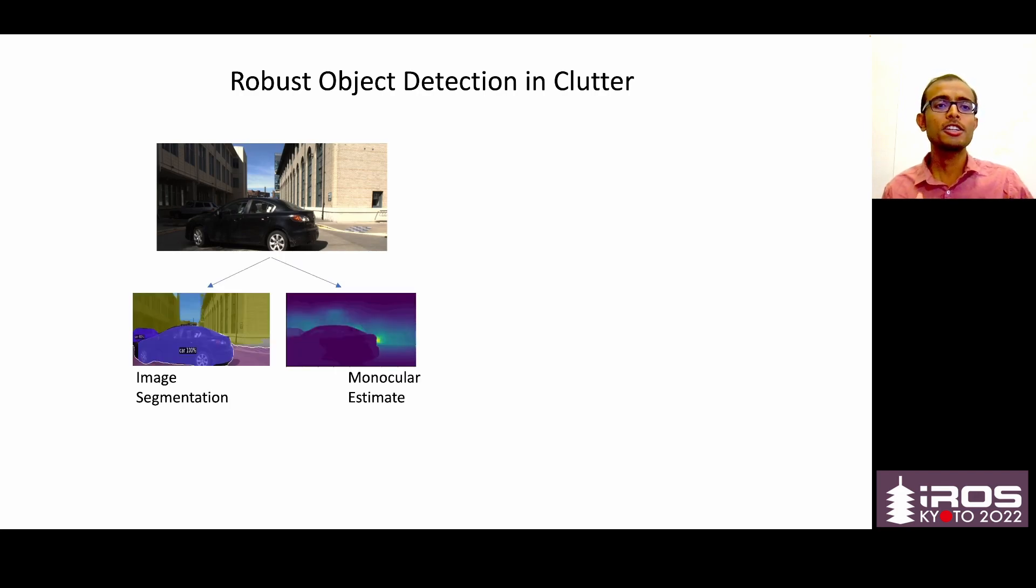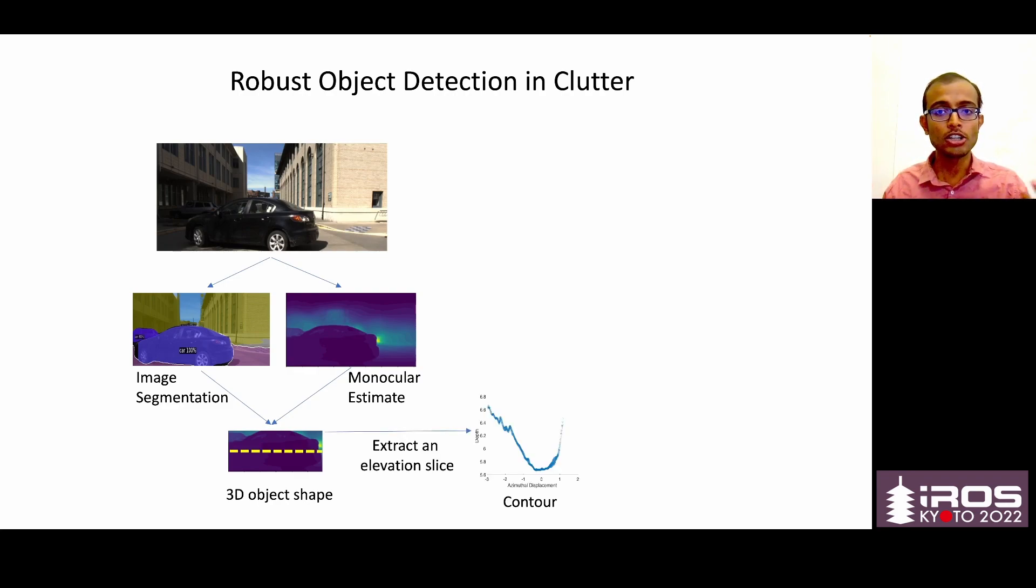At a high level, we first perform image segmentation and monocular depth estimation on the camera image and obtain an approximate 3D shape of the object. This is approximate because monocular depth estimation can make huge errors in the absolute depth estimation, but it still captures the depth variation across an object such as a car. So we extract this depth variation and call it a contour.